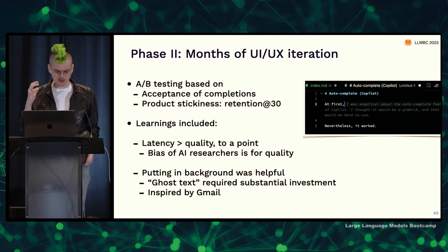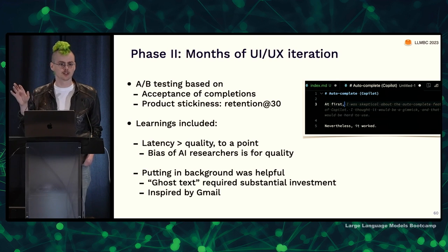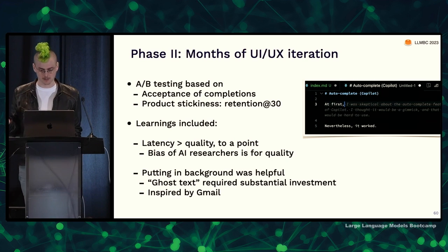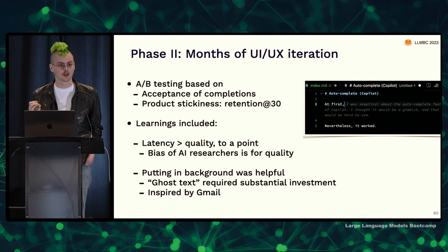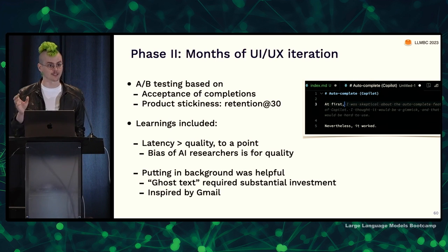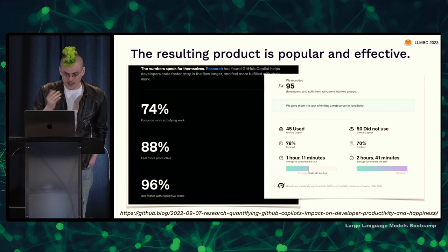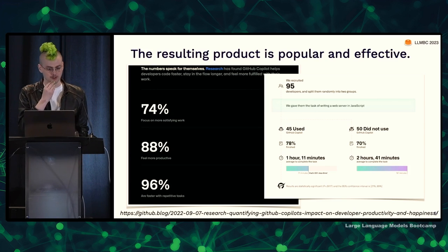As discussed, finding a way to put the AI in the background so that when it's kooky you just ignore it and when it's great you can quickly see it and make use of it was super important. It required pretty substantial investment — getting that ghost text feature was not built into VS Code and they really had to push to make it work. They ended up with a product that was very popular and effective — claiming basically a 2x or 3x speedup on certain boilerplate tasks like writing a web server in JavaScript, with great user numbers and people saying they feel more productive.